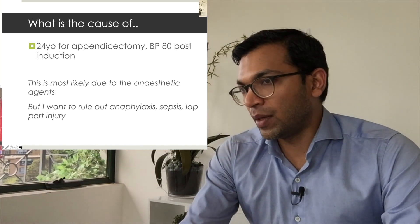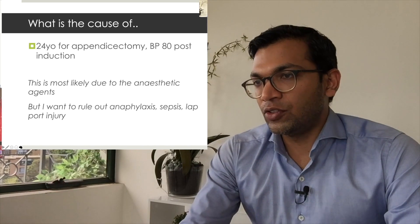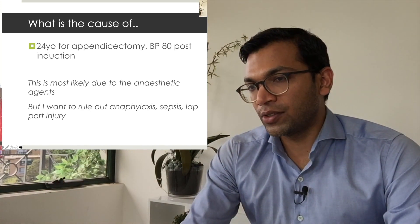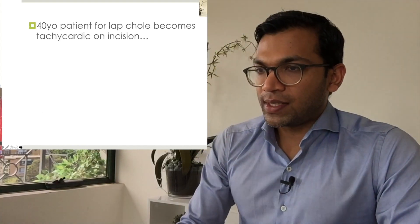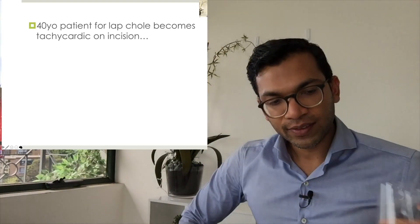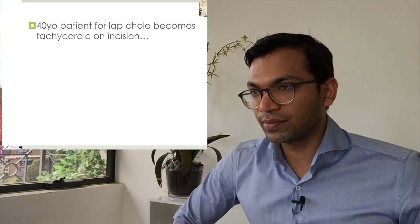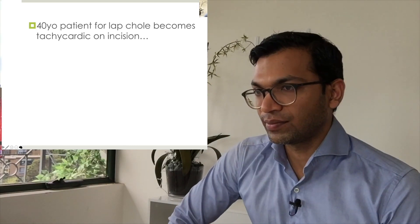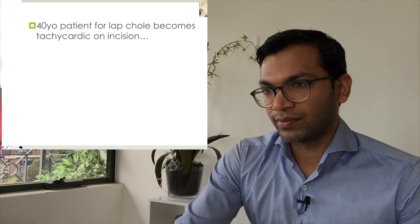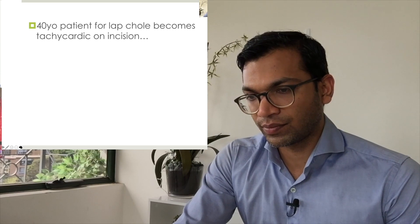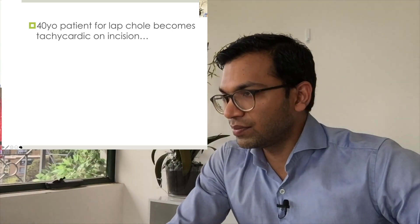If I'm wrong about those, if the examiner is unsatisfied, I've got all my causes of hypotension - take whatever classification you want: preload, rate, rhythm, contractility, afterload, or distributive, obstructive, cardiogenic, hypovolemic shock classifications - whatever you want. At least you've got your backup if you're wrong about those two. Let's try the next one: 40-year-old patient for a lap coli becomes tachycardic on incision.